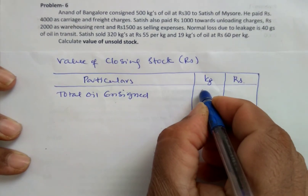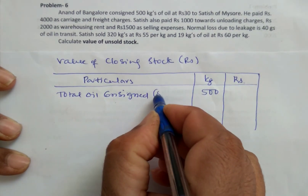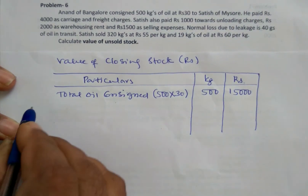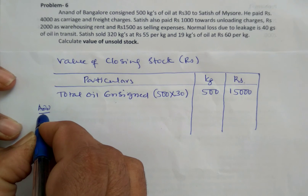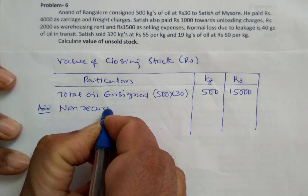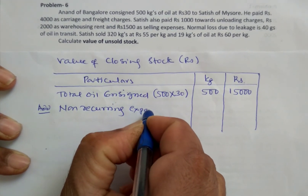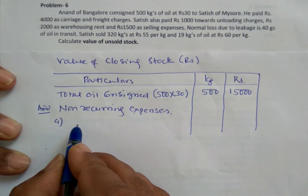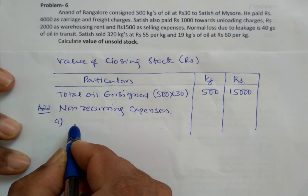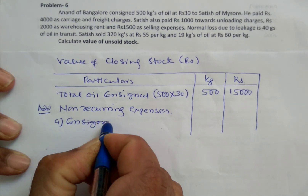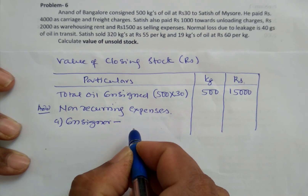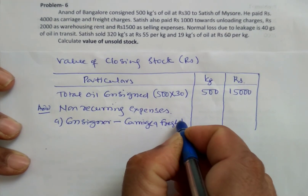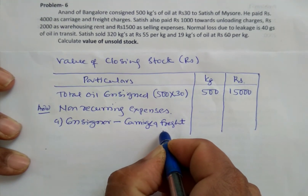Total oil consigned is 500 kgs at Rs 30 per kg, giving Rs 15,000. To this amount we have to add non-recurring expenses. When we calculate closing stock, we take expenses incurred by both the consignor and the consignee. The consignor incurred carriage and freight of Rs 4,000.